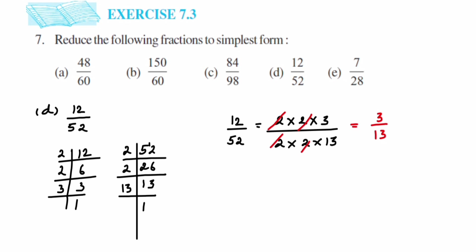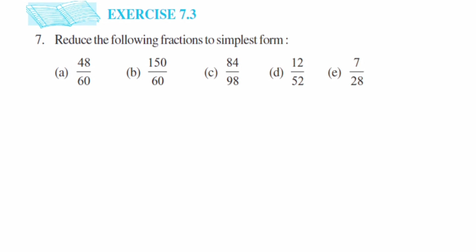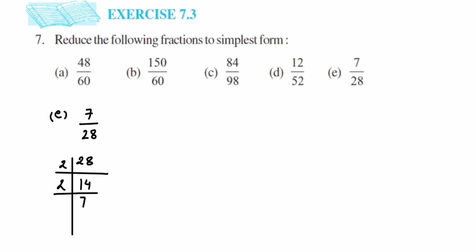Now the last problem: 7/28. You can directly cancel 7 and 28 because 28 goes in the 7 table, and 7 is a prime number. I'll show the prime factorization for 28: 2 × 14 = 28, then 2 × 7 = 14, and 7 × 1 = 7. So 7 can be written as 7 × 1, and 28 is 2 × 2 × 7. Cancel the 7 in numerator and denominator.